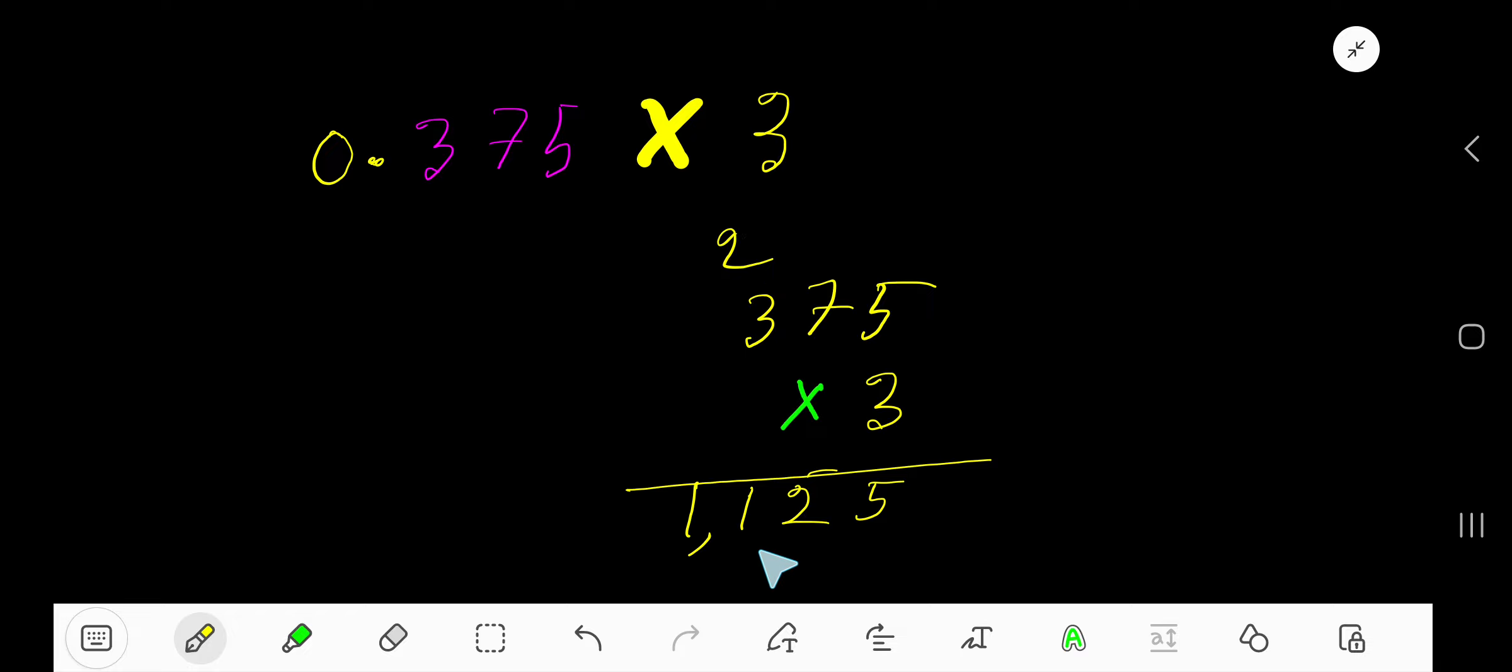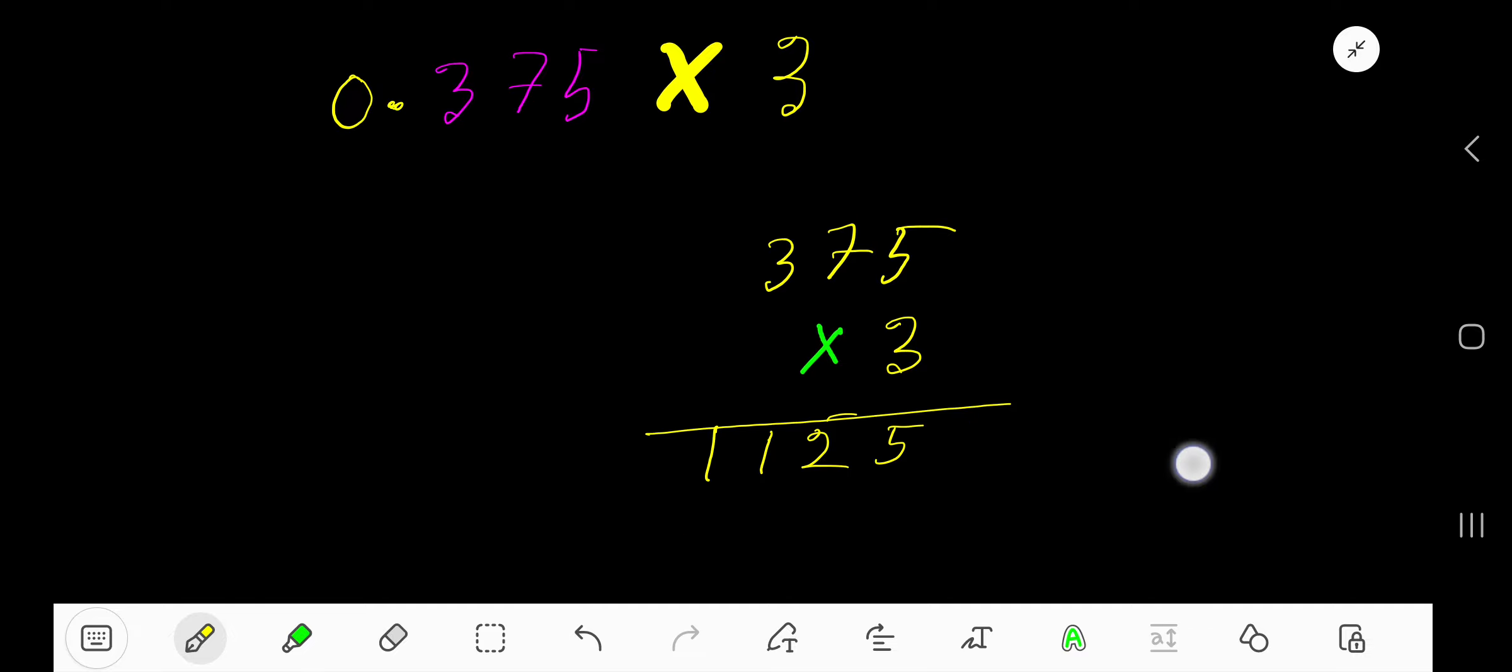This is not the result. We need to place the decimal. Look, after the decimal in 0.375, we have 3 digits: 1, 2, 3. That is 3 places. So from right to left, count 1 digit, 2 digits, 3 digits.